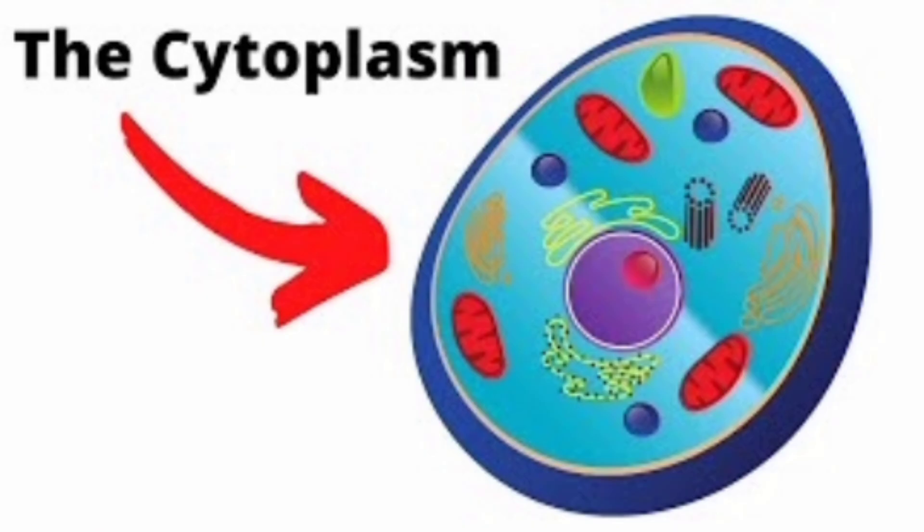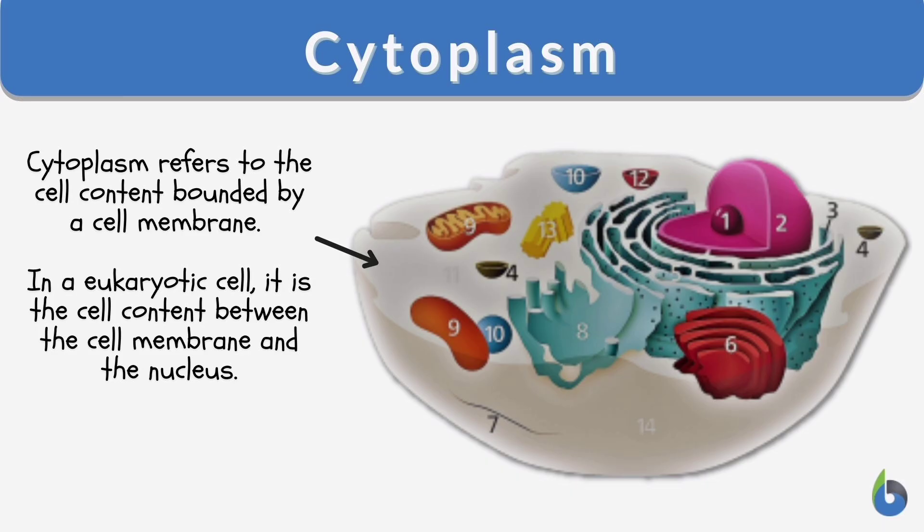Next is the cytoplasm. Cytoplasm is a jelly-like substance present between the cell membrane and the nucleus. Various organelles such as mitochondria, Golgi bodies, ribosomes, etc. are present in the cytoplasm.